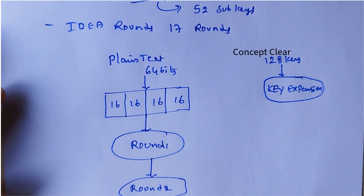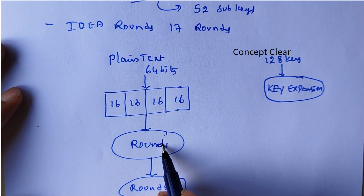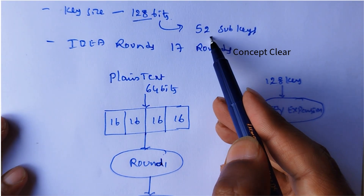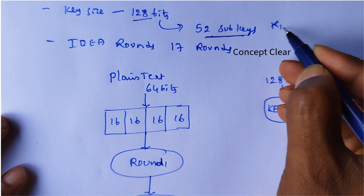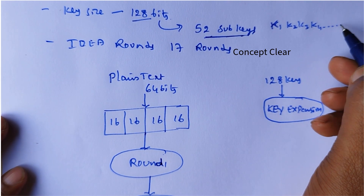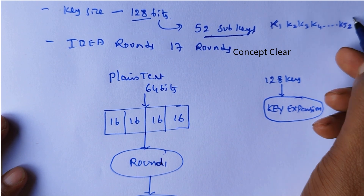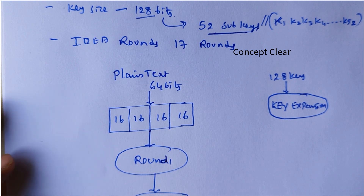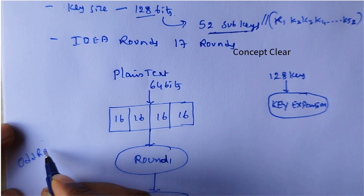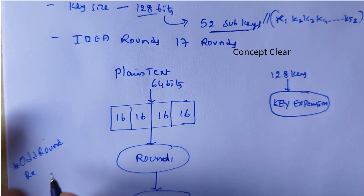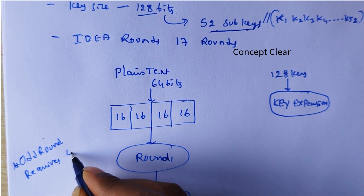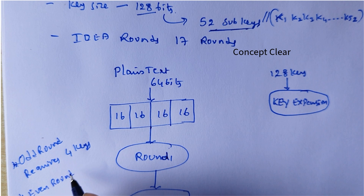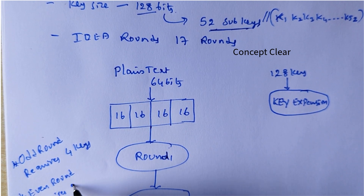Here also, key expansion. The duty of key expansion is to generate keys according to the rounds. The 128-bit key is expanded into 52 sub-keys: K1, K2... up to K52. Odd rounds require 4 keys, and even rounds require 2 keys.